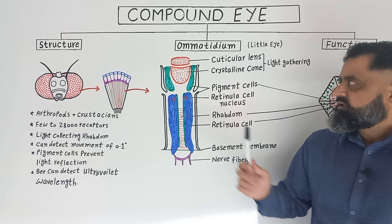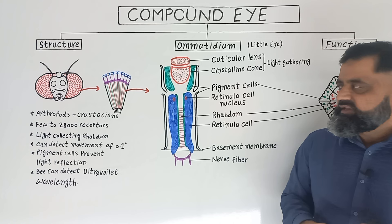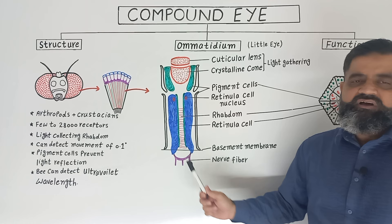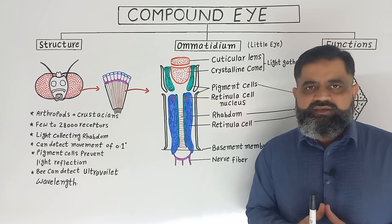To summarize: light enters the cuticular lens, then the crystalline cone, which gathers all the light waves. Pigment cells help to avoid dissipation of that light to other ommatidia present nearby. The retinula cells contain the central rhabdom, which collects all these light wavelengths, and then these wavelengths are converted into a nerve impulse so the object can be detected with the help of the central nervous system.